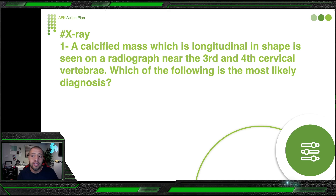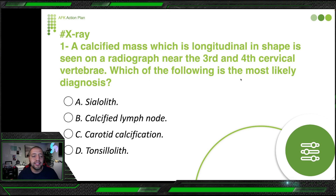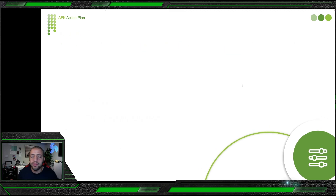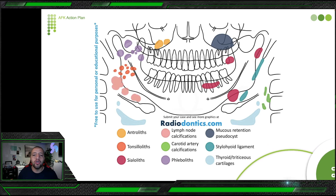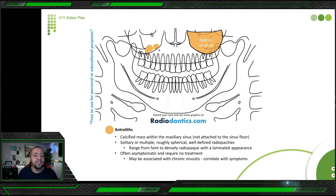First question from X-ray: a calcified mass which is longitudinal in shape is seen on a radiograph near the third and fourth cervical vertebrae — which of the following is the most likely diagnosis? This topic has been asked a lot in previous cycles, so let's discuss it in detail so you get the concept and can answer any question. Here are the calcified masses you can see in a panoramic X-ray; we'll discuss each one.